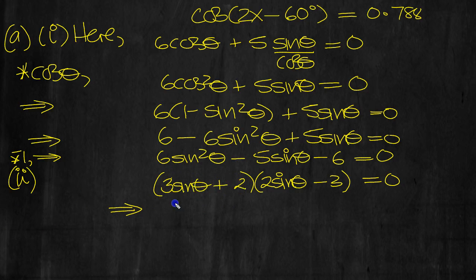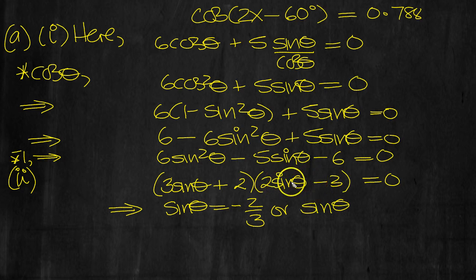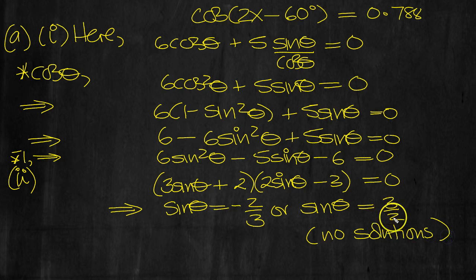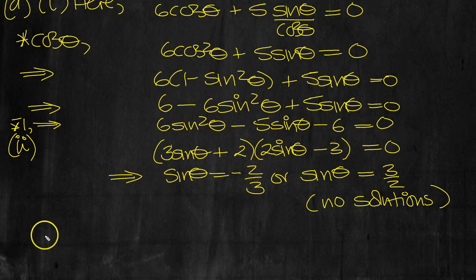This is 0 then, this part here, when sine theta equals minus 2 thirds, isn't it? Or, and looking at this one, sine theta would need to equal 3 over 2, wouldn't it? Yeah, from that one. And there's no solutions for that, because sine just varies between minus 1 and 1, and 3 over 2 is outside the solution range. So there's no solutions for that part, so we're just looking at this.